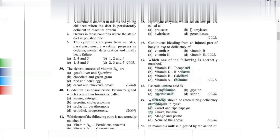Continuous bleeding from an injured part indicates a deficiency of vitamin K. Vitamin K is required for blood clotting. If vitamin K is deficient, blood will not clot properly and the person will bleed continuously.